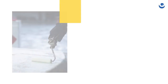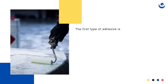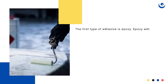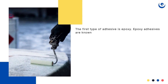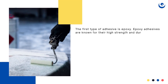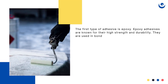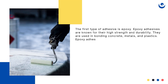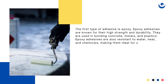The first type of adhesive is epoxy. Epoxy adhesives are known for their high strength and durability. They are used in bonding concrete, metals, and plastics. Epoxy adhesives are also resistant to water, heat, and chemicals, making them ideal for use in harsh environments.